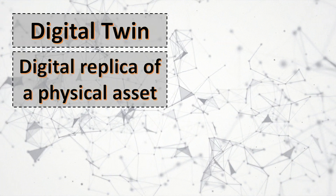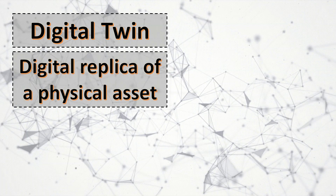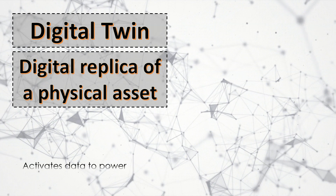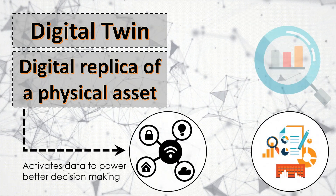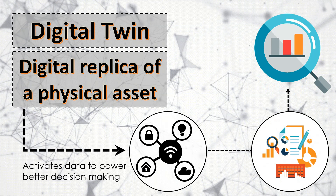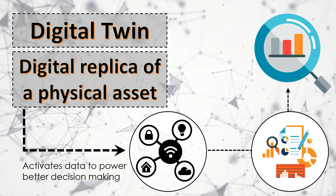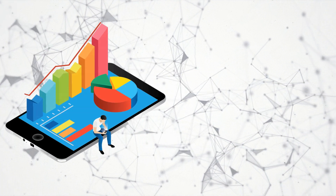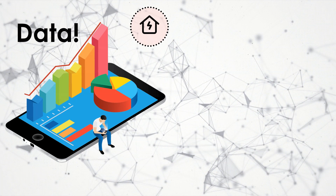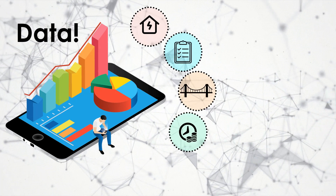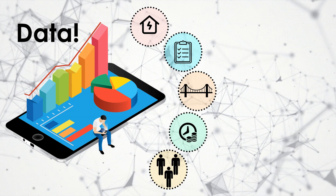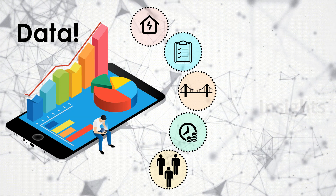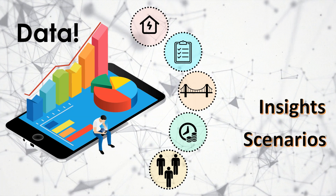As we already know, a digital twin is a digital replica of a physical asset. But what does a digital twin do? This is important — it activates data to power better decision making. So digital twin is not only a digital replica of a physical asset, it's way beyond that. Digital twin is the data that supercharges its value. It helps users do more with less and provides them with insights, scenarios and representations.